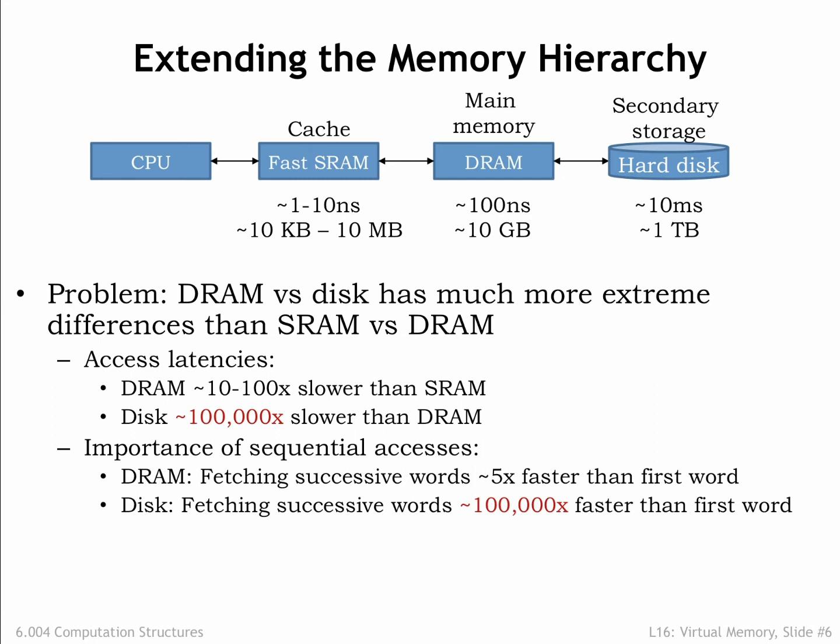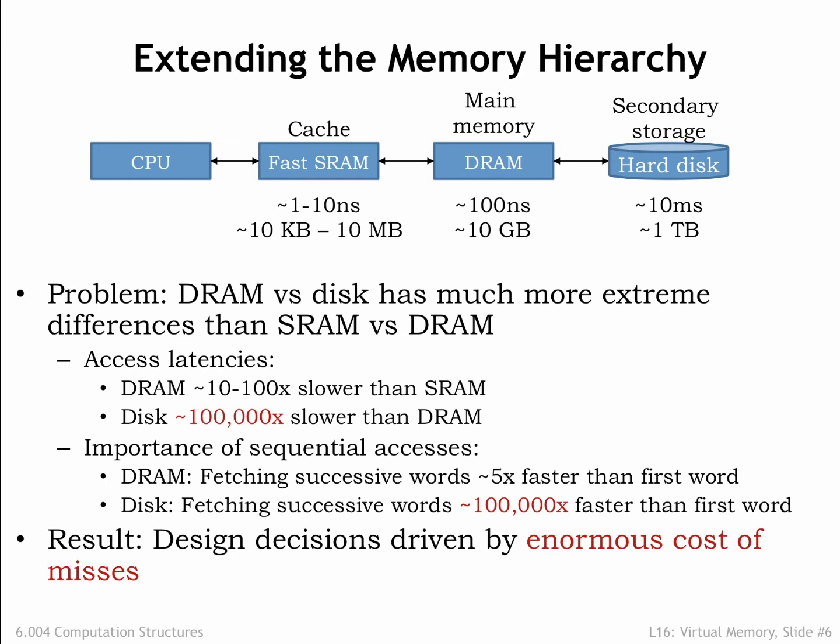When looking at DRAM timing, we discovered that the additional access time for retrieving a contiguous block of words was small compared to the access time for the first word, so fetching a block was the right plan, assuming we'd eventually access the additional words. For disks, the access time difference between the first word and successive words is even more dramatic, so not surprisingly, we'll be reading fairly large blocks of data from disk. The consequence of the much larger secondary storage access time is that it will be very time-consuming to access disk if the data we need is not in main memory. So we need to design our virtual memory system to minimize misses when accessing main memory, as a miss and the subsequent disk access will have a huge impact on the average memory access time.